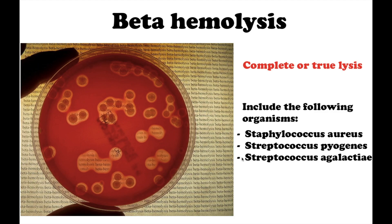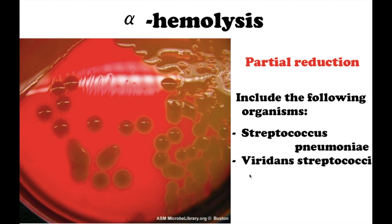Streptococcus agalactiae. Alpha hemolysis is the reduction of the red blood cell hemoglobin to methemoglobin in the medium surrounding the colony. This causes a green or brown discoloration in the medium. Microscopic inspection of alpha hemolyzed red blood cells shows that the cell membrane is intact, so it is not, in fact, true lysis.